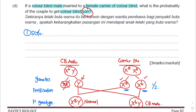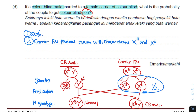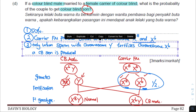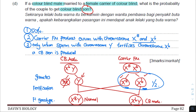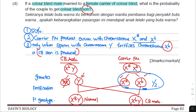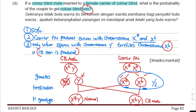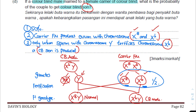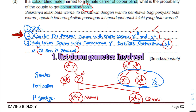How do we explain this? The carrier female produces ova with X^B and X^b. Only when the sperm with chromosome Y fertilizes the ovum with X^b can we produce a colorblind son. So whenever a question asks how a child inherits something, first list down the possible gametes both parents can produce, then mention which gametes were fertilized to give the phenotype the question is asking for.